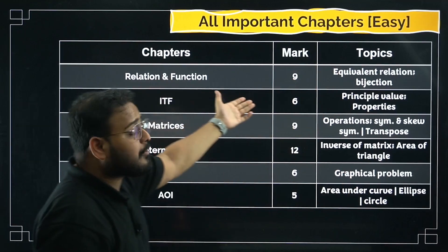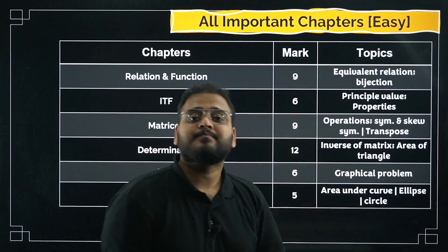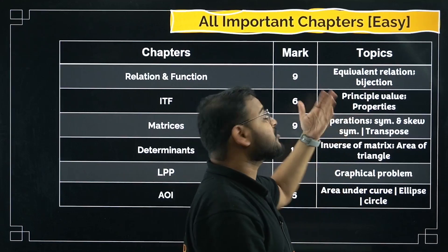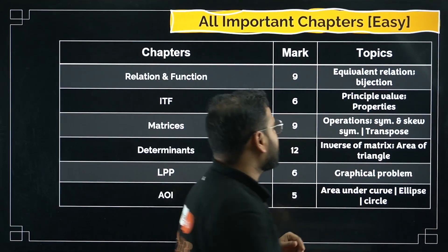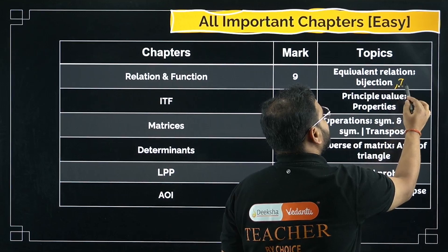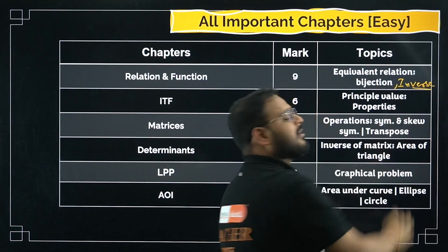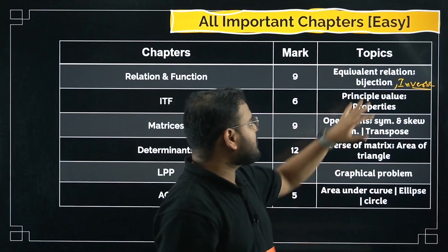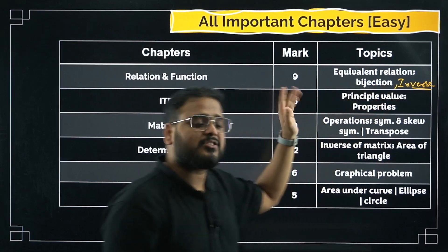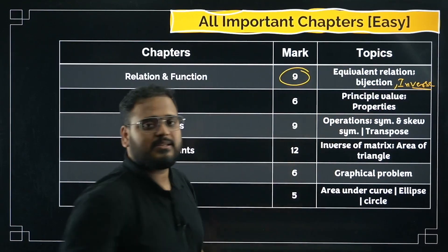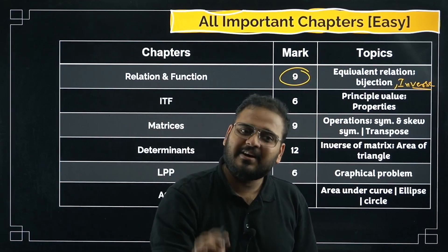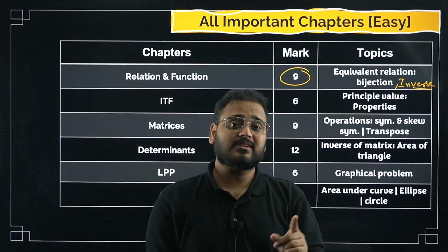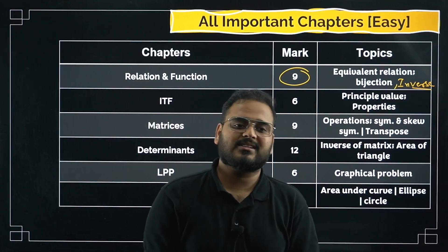Relations and Functions — 9 marks weightage, very easy chapter. Important topics: equivalence relation, finding the inverse — whether the inverse exists for a function — and composite functions (g∘f and f∘g). These are the important topics in Relations and Functions carrying 9 marks. It is very, very easy. Check out my sessions in the KSET series and Brahma series — I have taught you this there as well.